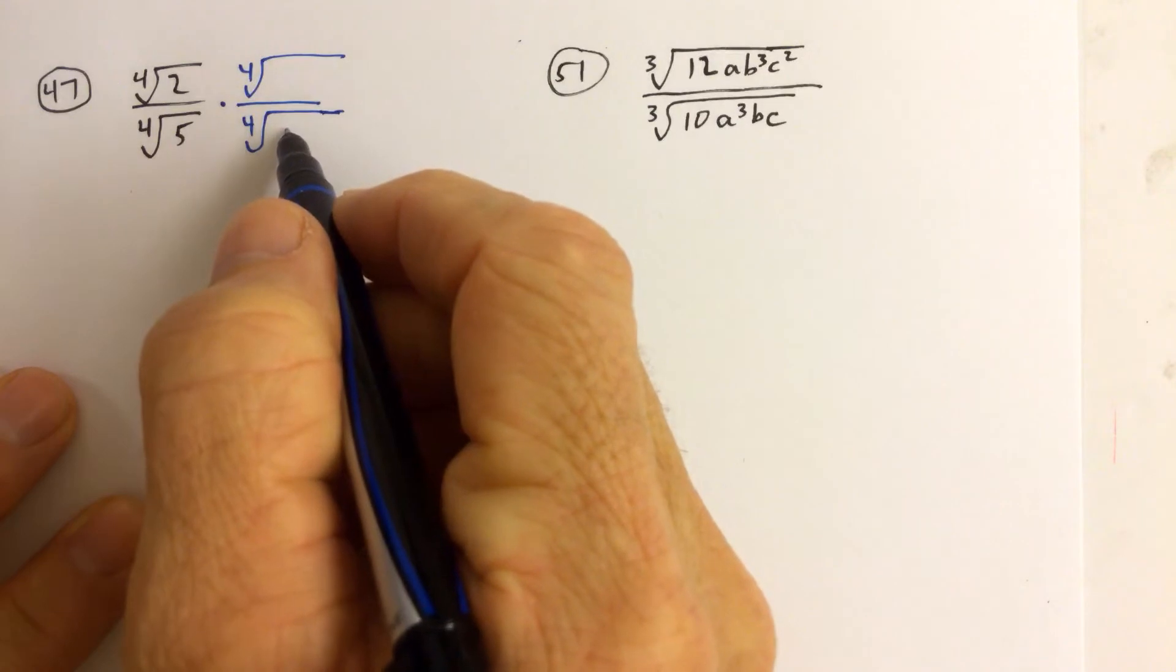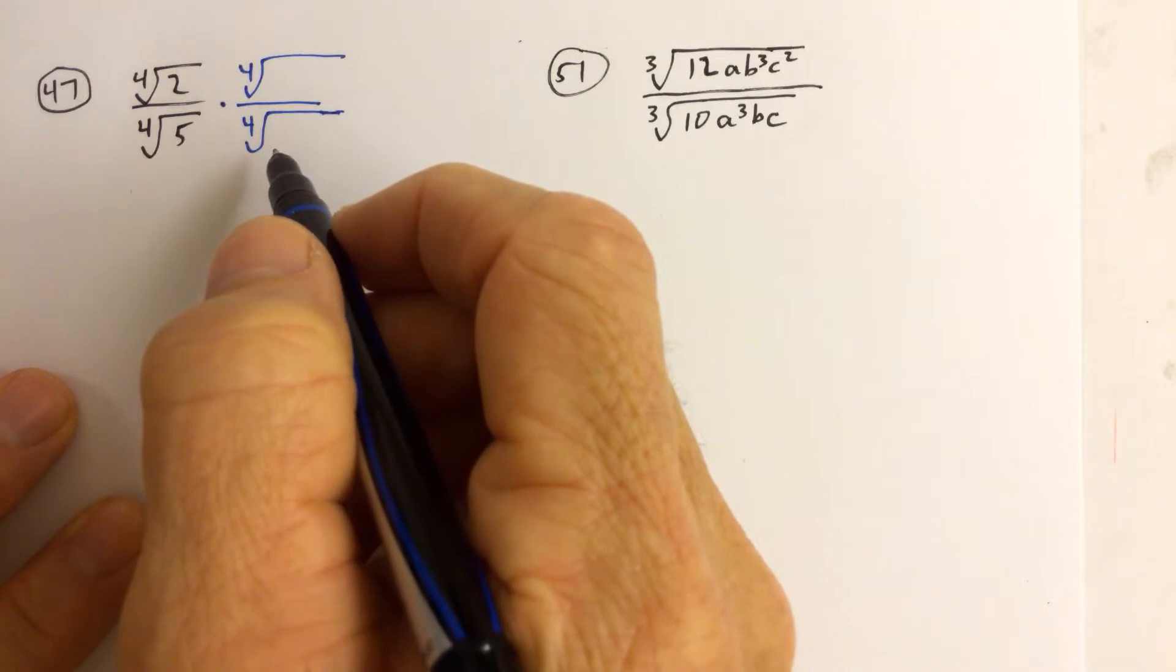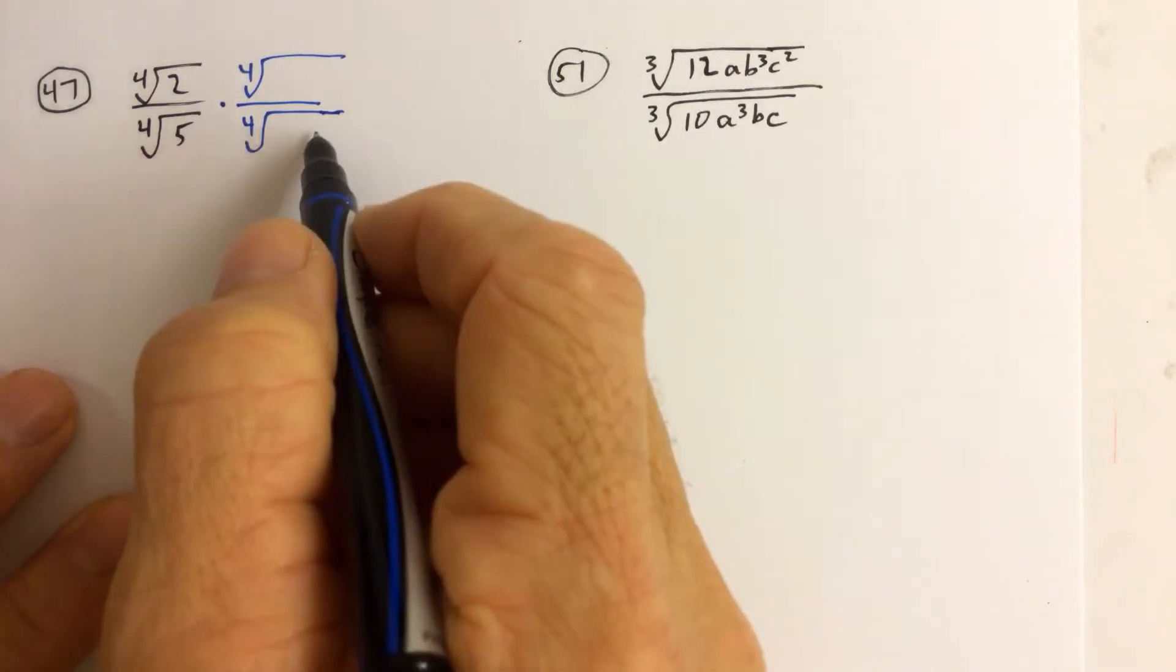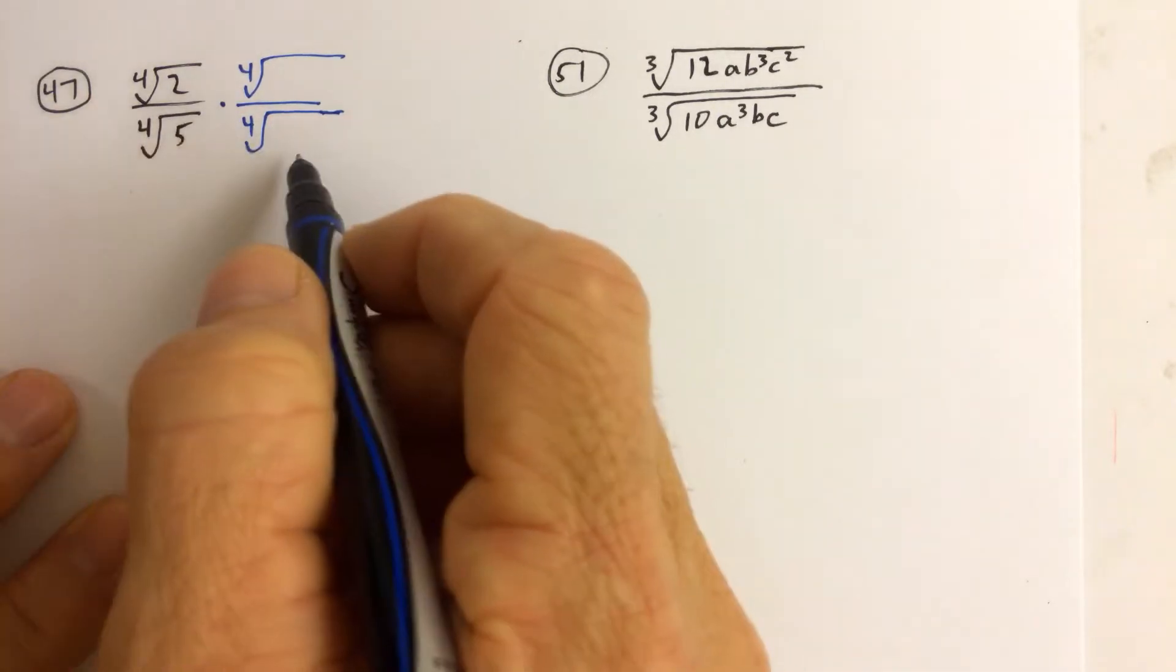then we would just put a 5 down here. So we'd multiply top and bottom by the 4th root of 5, but that's not understanding the concept. The concept is, when you rationalize the denominator, you need to get rid of the root in the denominator.